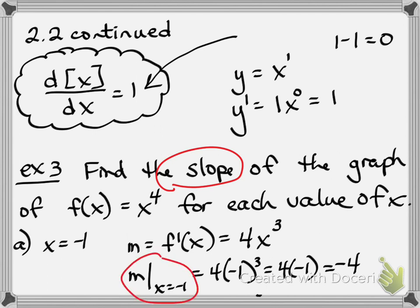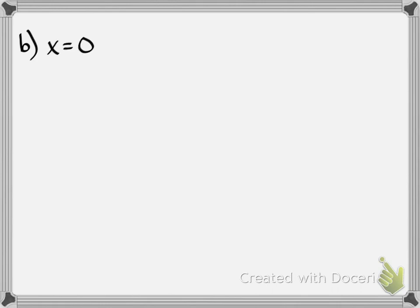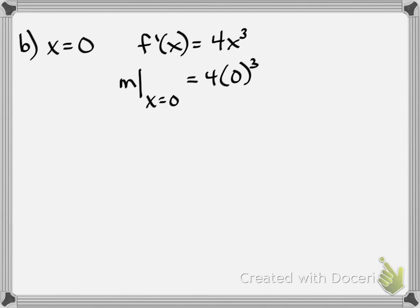This notation — slope evaluated at a value — is how I learned it from my teacher. Let's do part B: evaluate the slope at x equals 0. We had the slope formula as 4x to the 3rd. So the slope evaluated at x equals 0 is 4 times 0 to the 3rd, which is just 0.